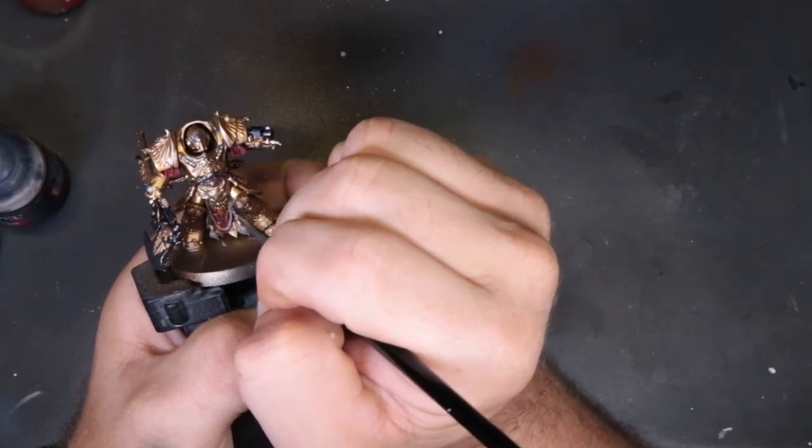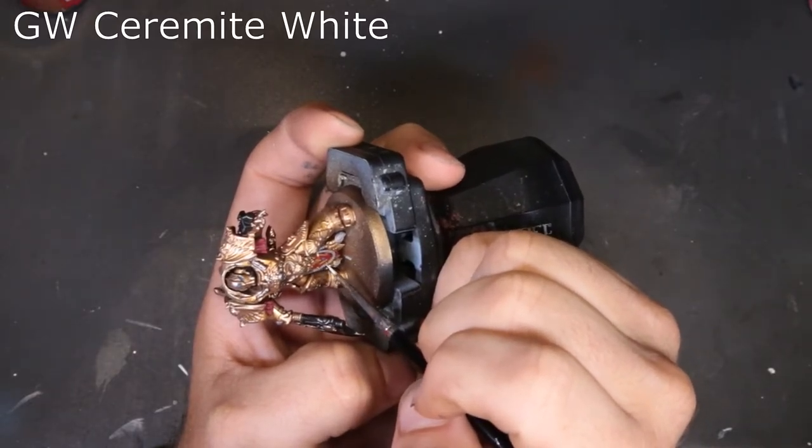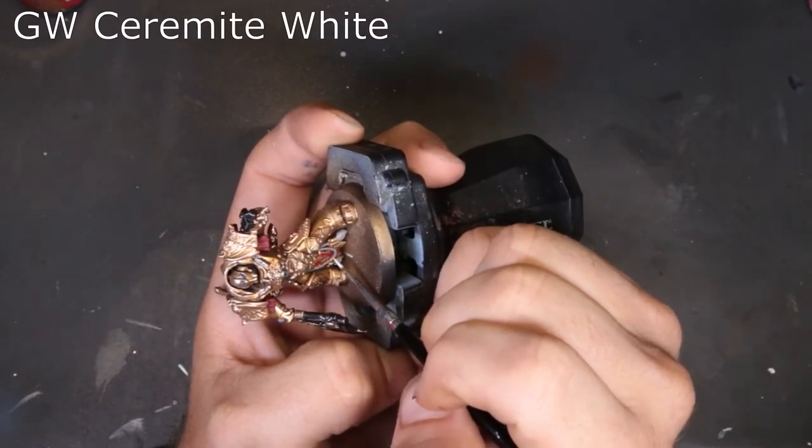We come through with Ceramite White. It's the final highlight on these ropes. And again, we're just working in a smaller area to try and make sure that it has a little bit of differentiation to it. It goes from the deepest dark in the recesses to the brightest bright on the very top of it.